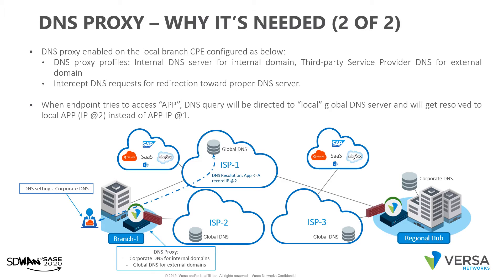The end user is requesting the same Office 365 content, but this time the DNS split proxy is configured to intercept all Office 365 DNS resolution and redirect it to a local global DNS server — ISP1 in this case. This will return a list of server IP addresses within the same region as the user, and the content will then be served by an optimal server for that end user.